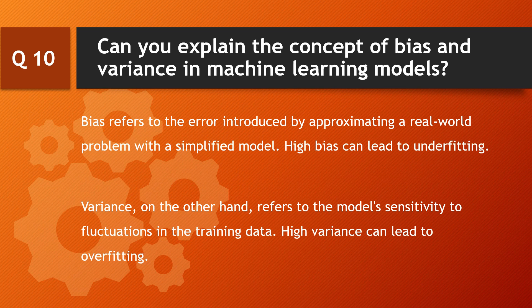Question: can you explain the concept of bias and variance in machine learning models? Bias refers to the error introduced by approximating a real-world problem with a simplified model — high bias can lead to underfitting. Variance refers to the model's sensitivity to fluctuations in the training data — high variance can lead to overfitting.